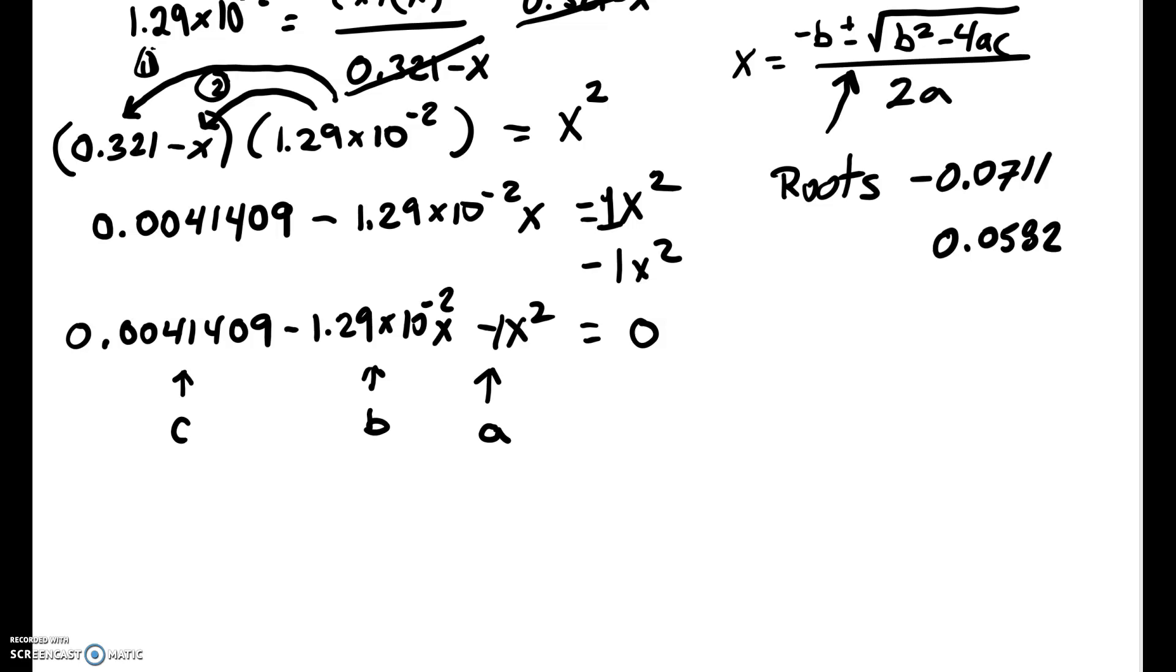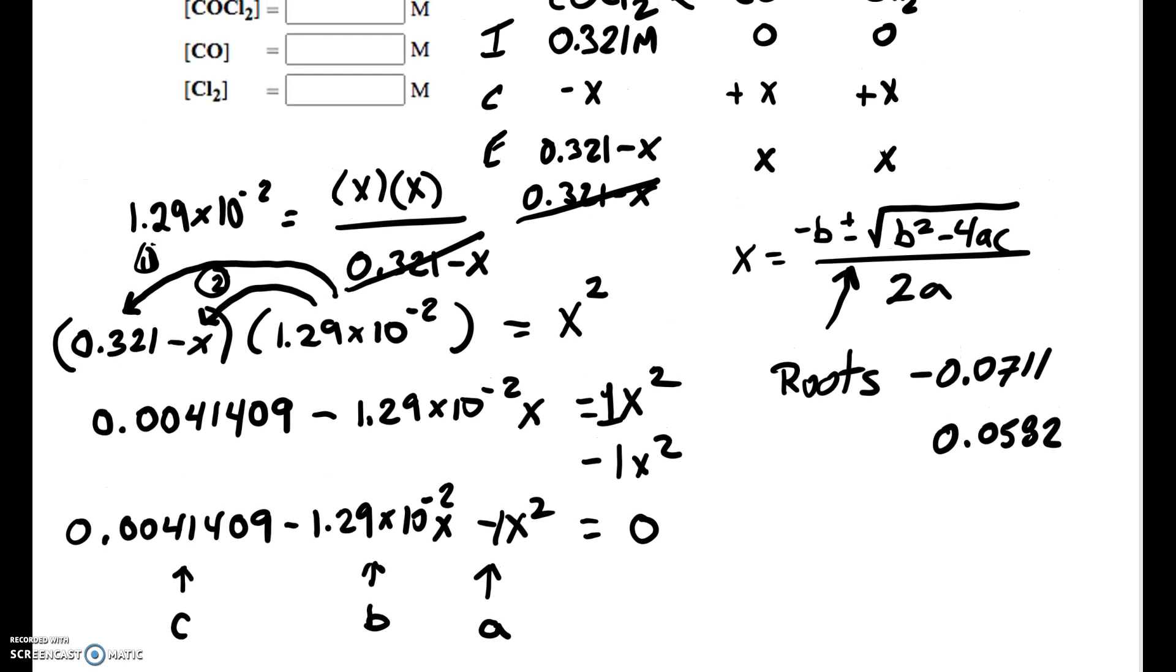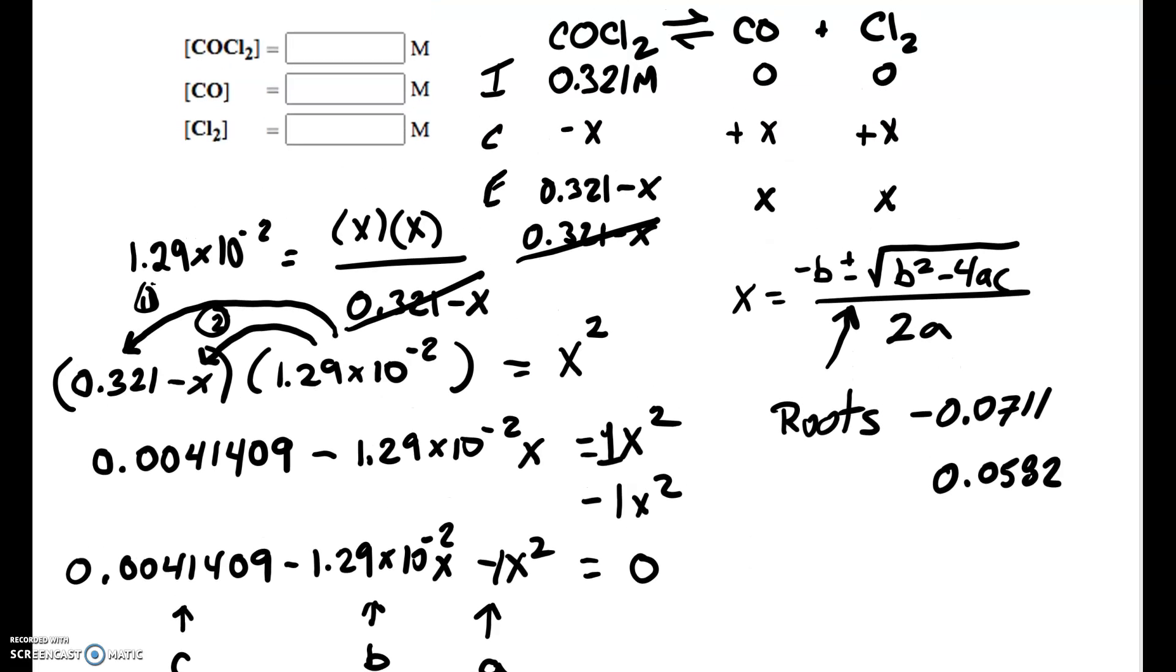And one of them will always not make sense. So when you go back to your ICE table here, if you have a negative X, that means that it goes down by an amount that's negative. That doesn't make sense. So we're going to just get rid of that negative term. And so X is going to equal 0.0582.